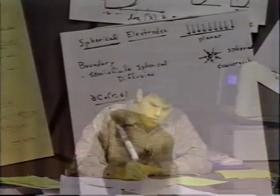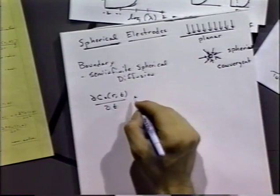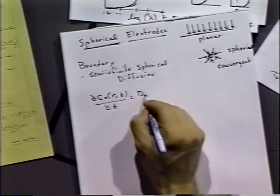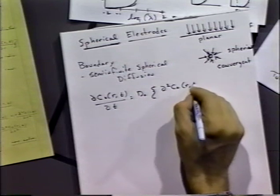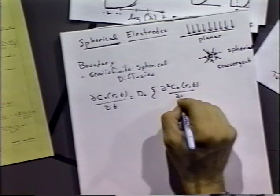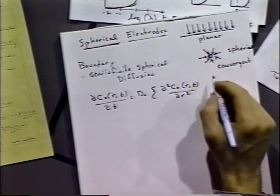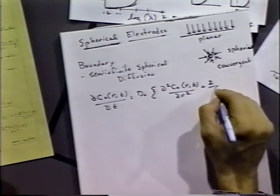In this case, the most appropriate method of solving this equation is using spherical coordinates. We've already done the spherical coordinate form of Fick's second law. We can write it down: the concentration of O as a function of radial dimension versus time is equal to the diffusion coefficient times the second derivative with respect to R, plus 2 over R times the first derivative.